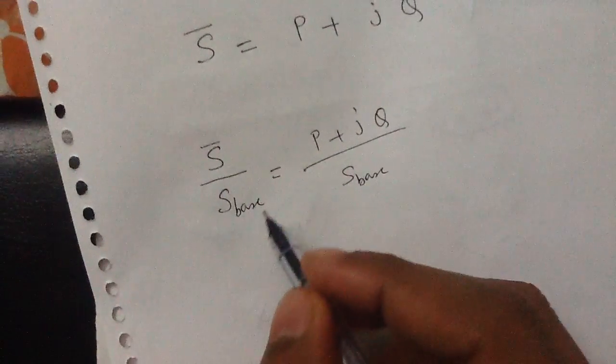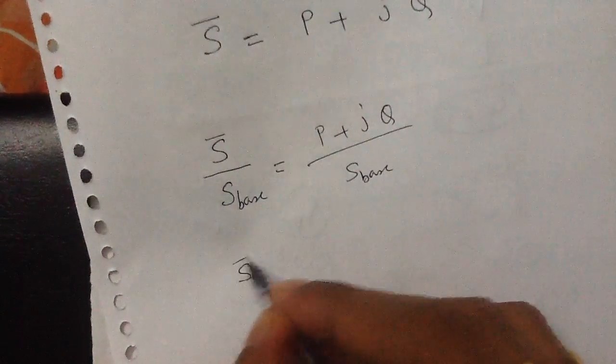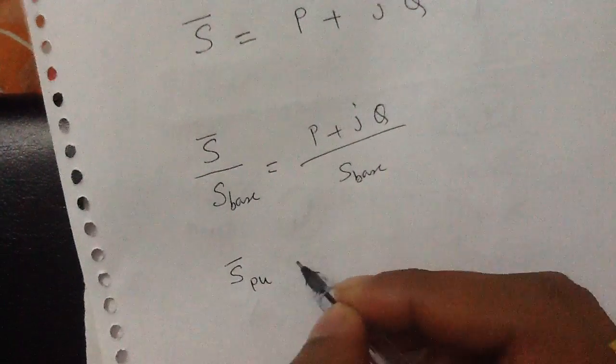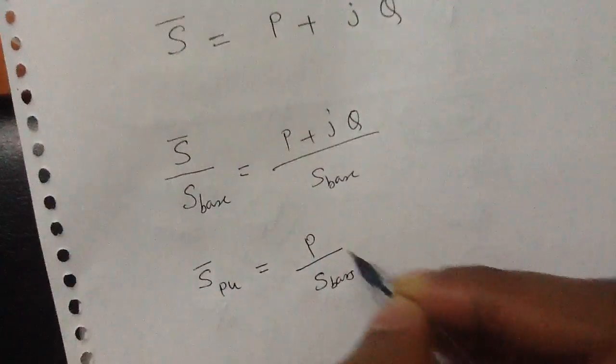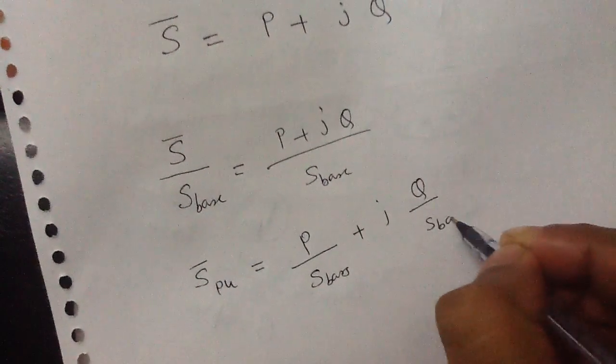So the per unit value of the apparent power can be written as P upon S base plus j Q upon S base.